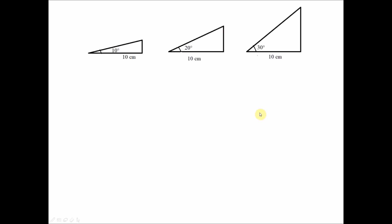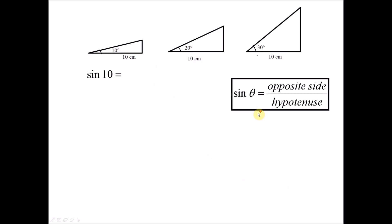We first find the sine of the angles using the formula: sine of a reference angle theta equals opposite side over hypotenuse. For 10 degrees, we measure the opposite side and the hypotenuse, divide them, and get 0.1736 — which you can verify on a calculator. For 20 degrees, we get 0.3420.